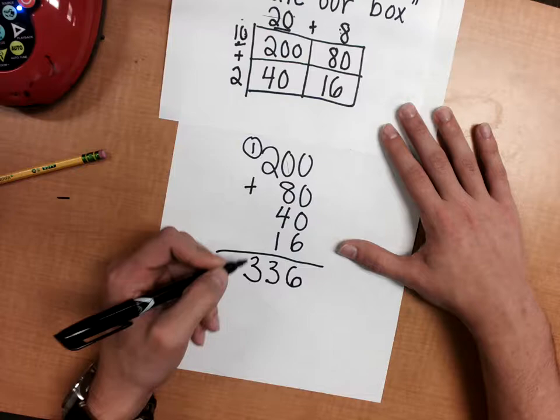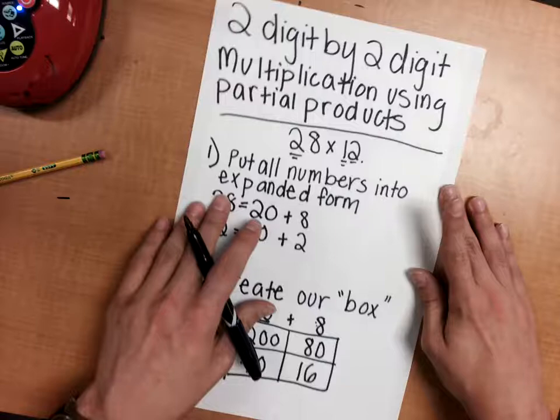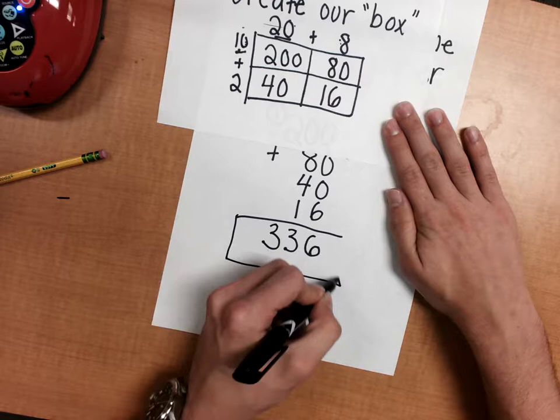So going back to our original problem, 28 times 12, we figured out that 28 times 12 is 336 using partial products to solve the problem.